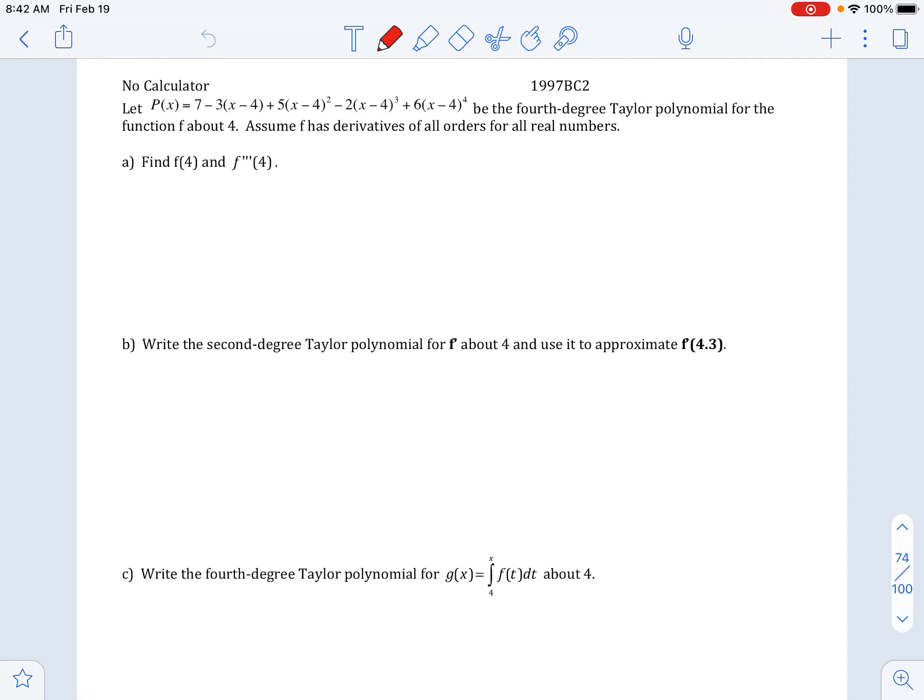So the first derivative, second derivative, etc. The first thing it wants us to find is f of 4. So when we create these polynomials, we know that the first term, unless it's 0, should be f of 4. So f of 4 is going to be 7.